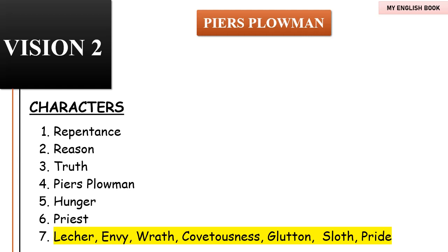Although the system runs smoothly at first, eventually some people try to fake illness to get out of working, leaving Piers no choice but to call upon Hunger. Hunger inflicts the fakers with starvation until they begin to work out of necessity. Once Hunger departs, many people go back to lazing. Truth then sends down a pardon to Piers, which states that those who help Piers work will be able to pass through Purgatory quickly. A priest asks Piers for the opportunity to translate the pardon aloud from Latin to English. Upon reading it, the priest is surprised to find only two lines and declares it is not a pardon at all. Angry, Piers rips the pardon in two and begins to argue with the priest. This is the end of Vision Two.